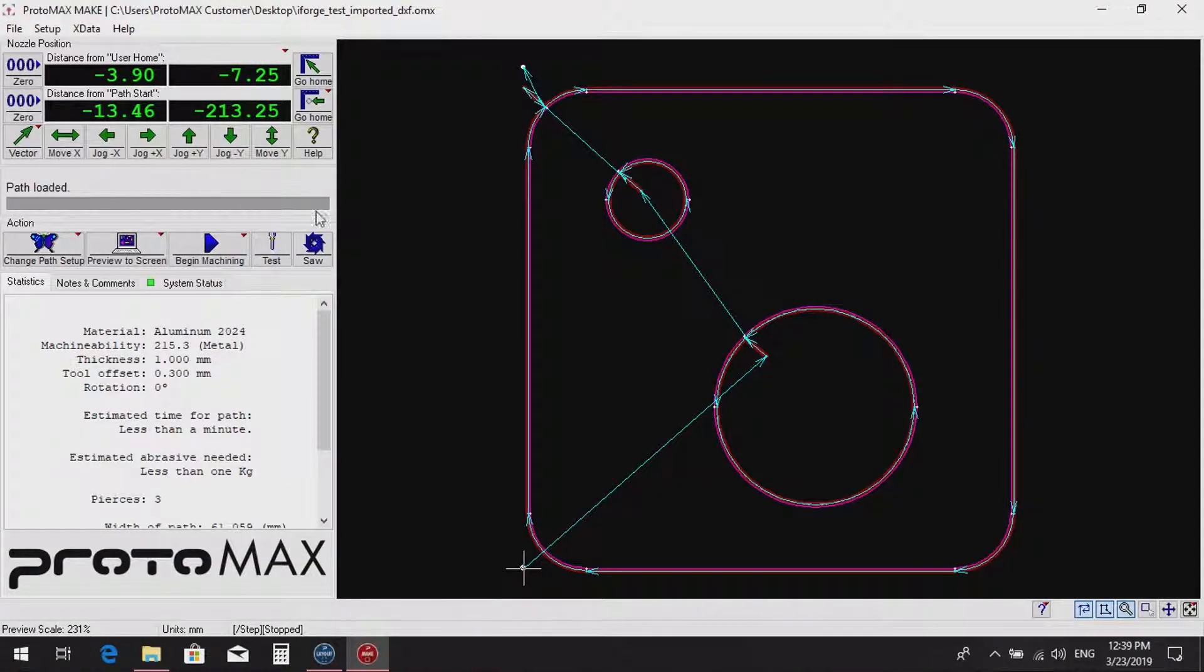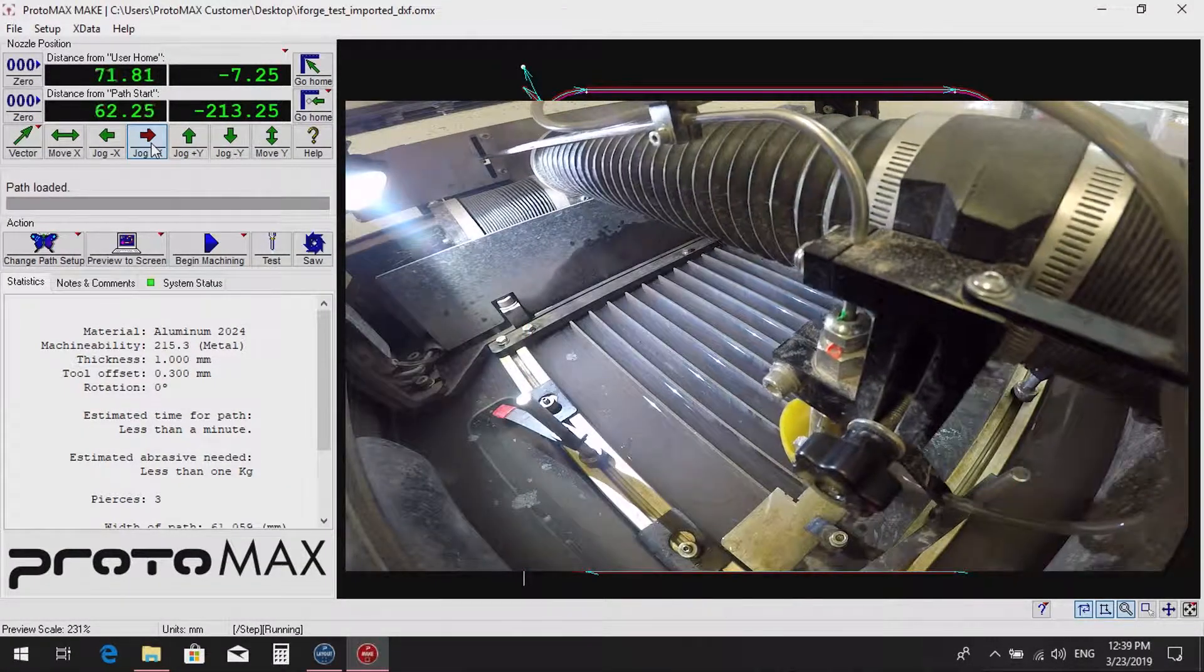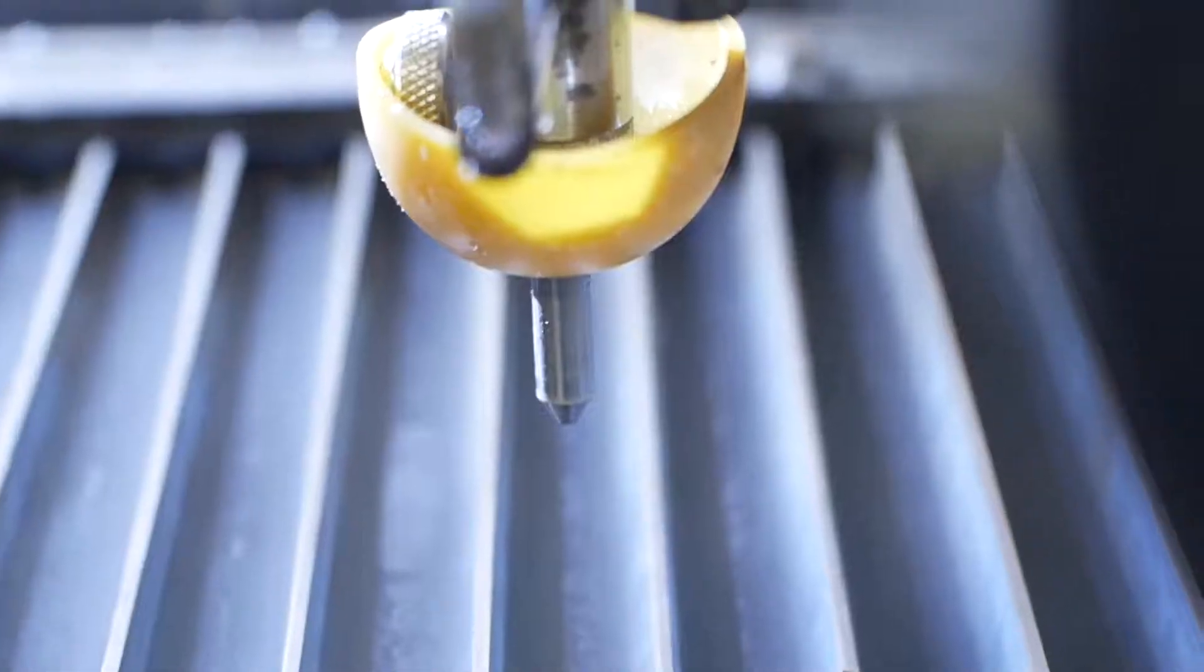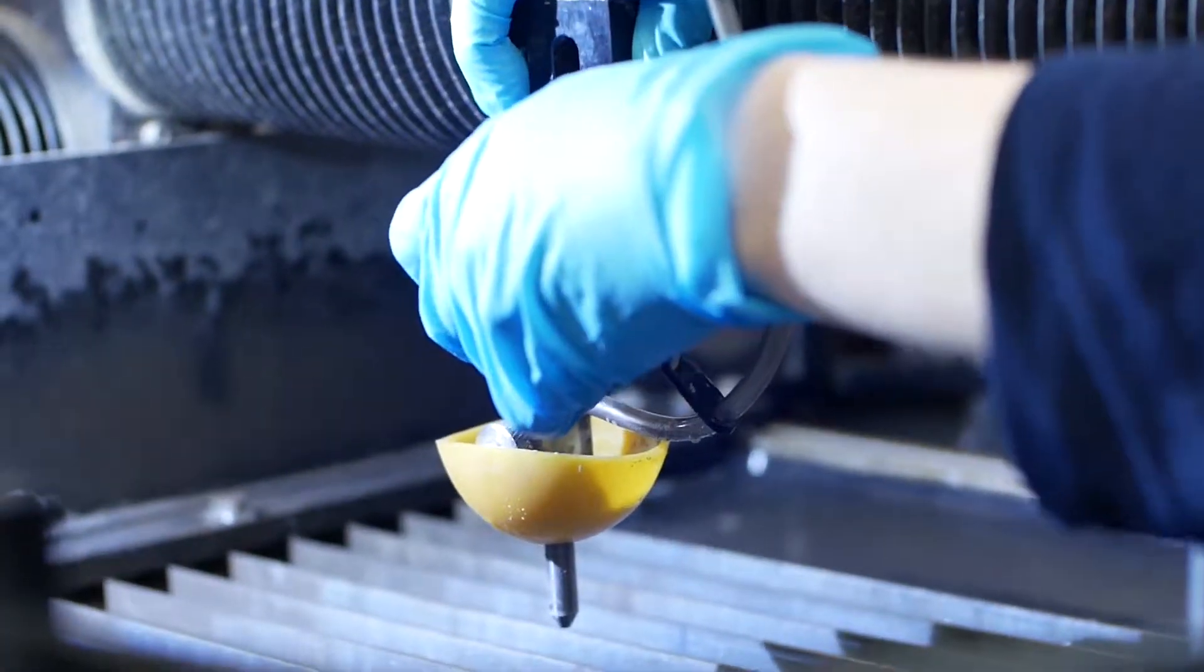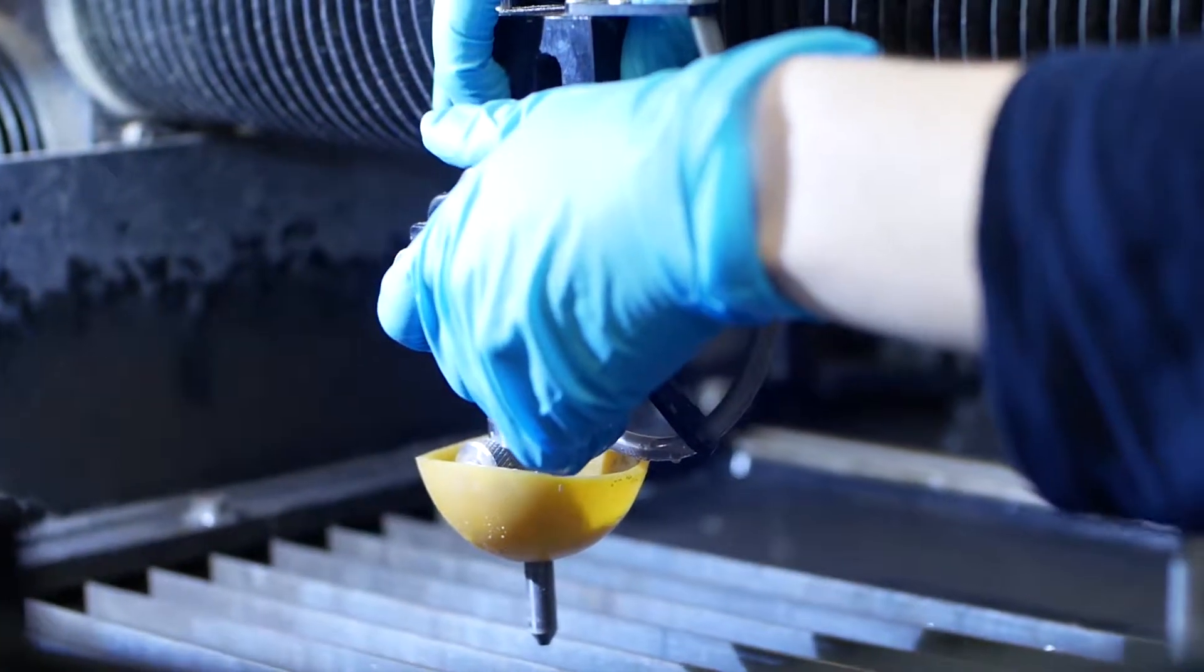Use the jog keys in the OMX MAKE software to move the nozzle to the middle of the tank and midway between two slats. Check that the nozzle is less than 25mm above the water. Close the lid.